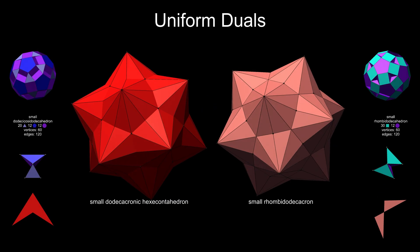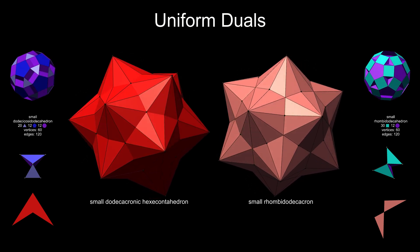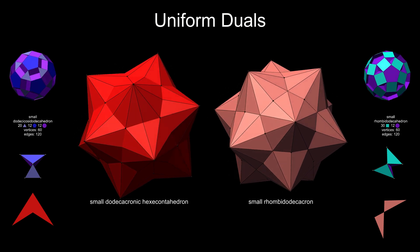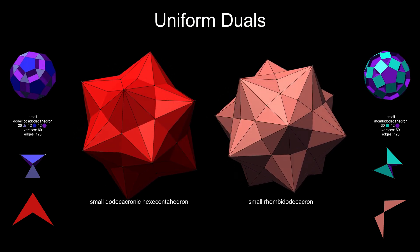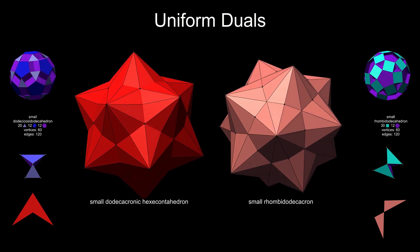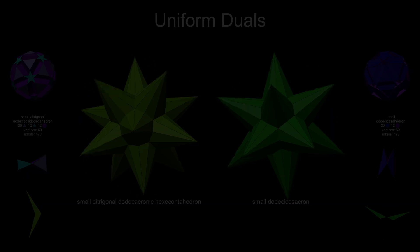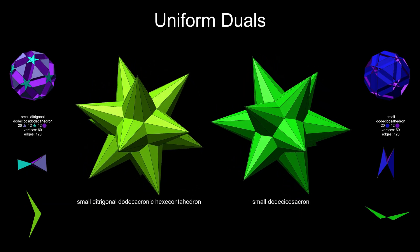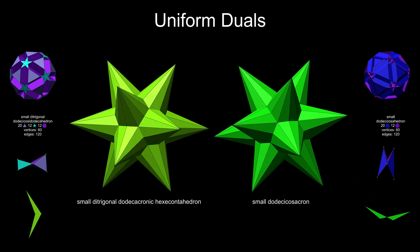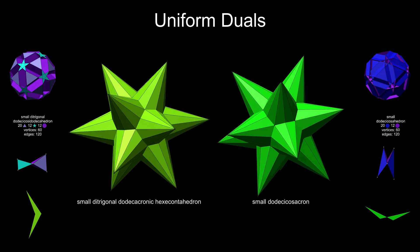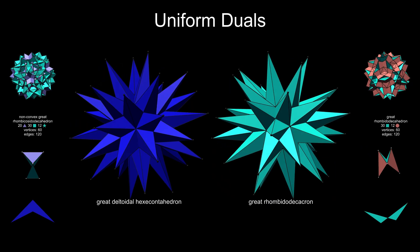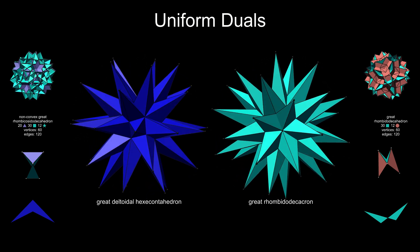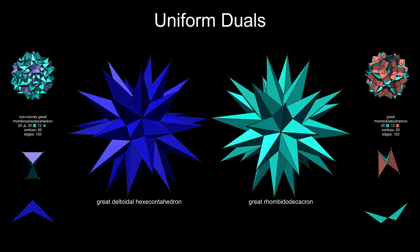There are three more pairs of uniform duals that are absolutely identical: the small dodecacronic hexacontahedron and the small rhombidodecachron; then the small ditrigonal dodecacronic hexacontahedron and small dodecacosachron; and finally, the great deltoidal hexacontahedron and great rhombidodecachron.